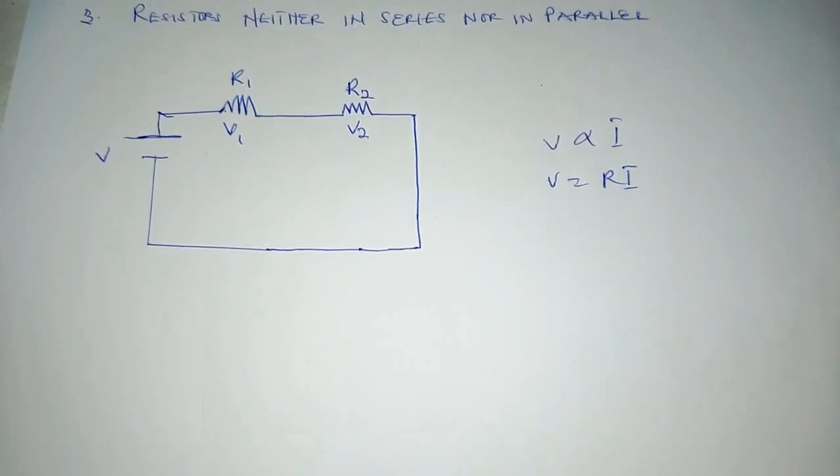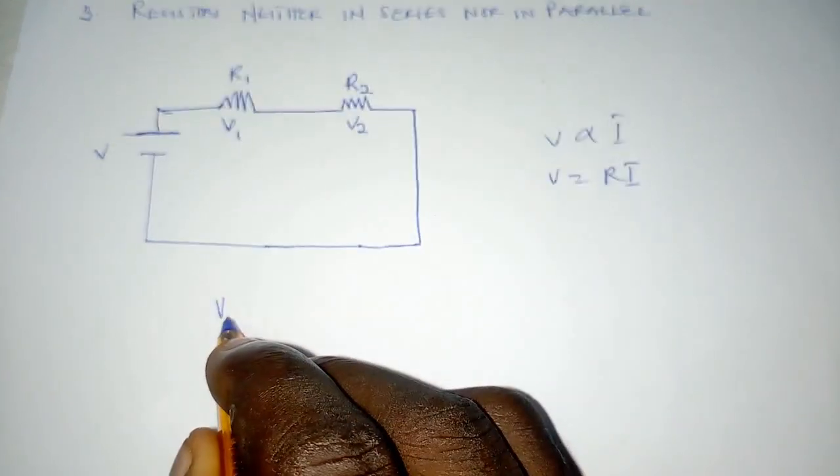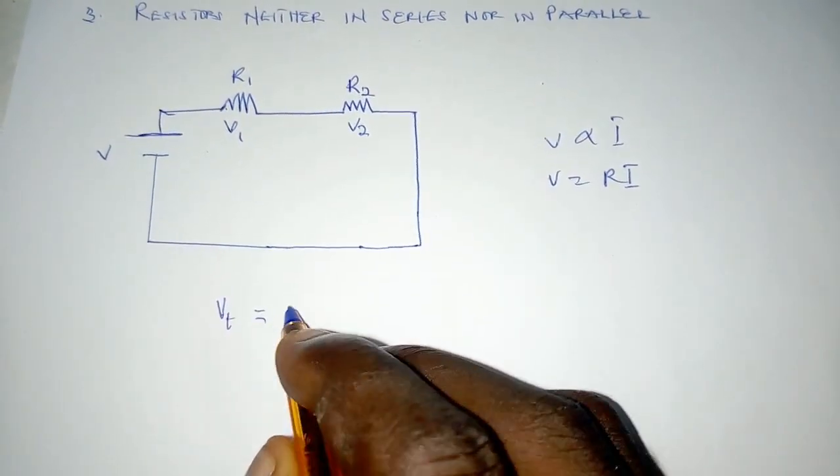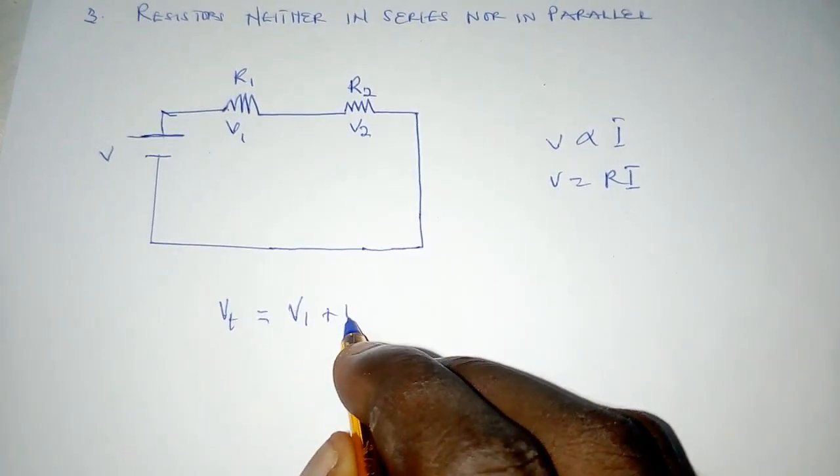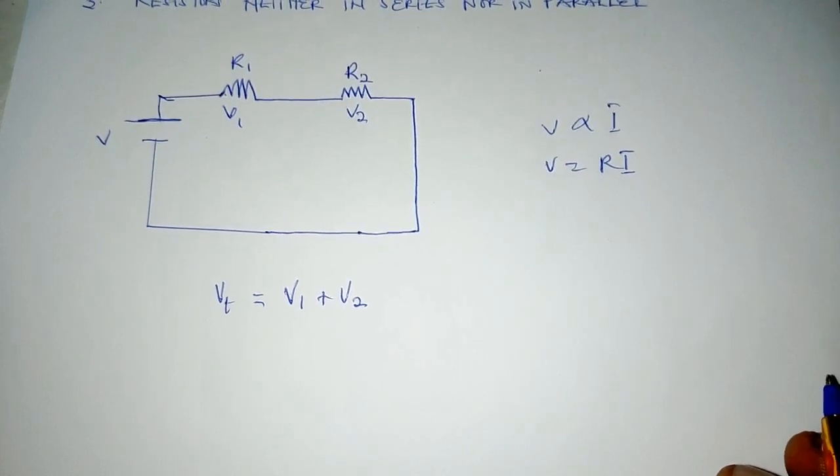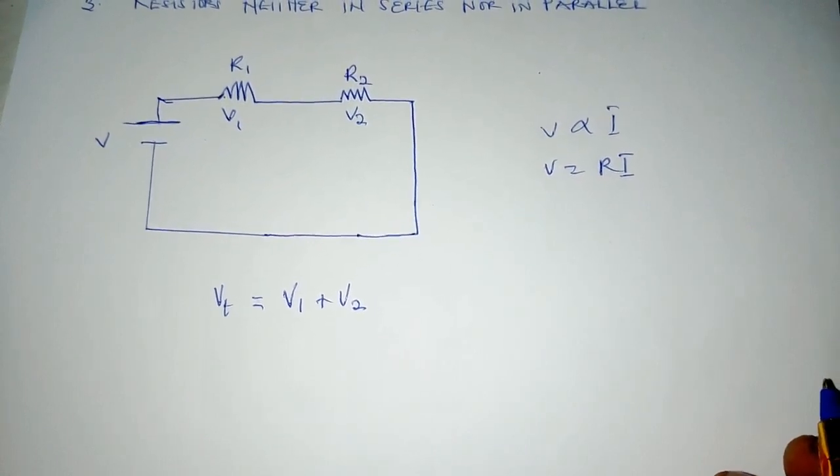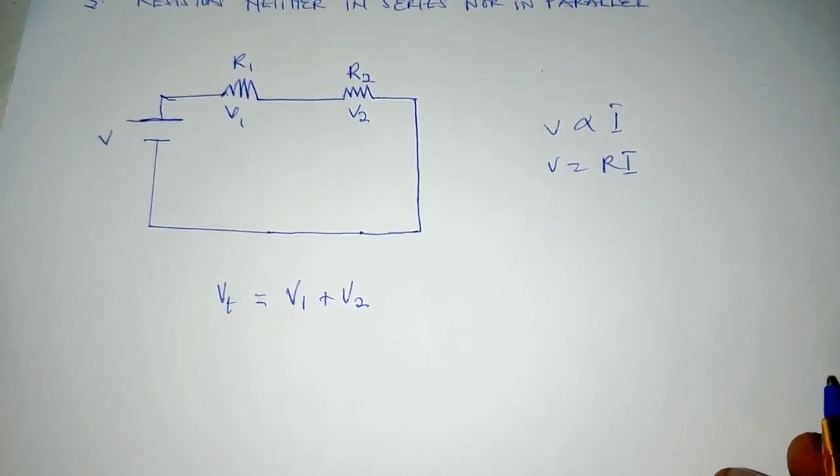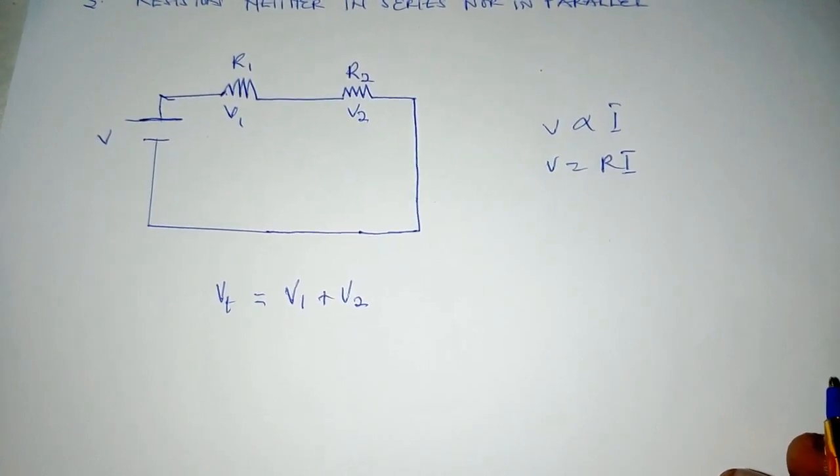Now, total voltage, now let's say Vt becomes equal to V1 plus V2. As earlier said, we said with series connection, we have the same current flowing through each of the resistors.